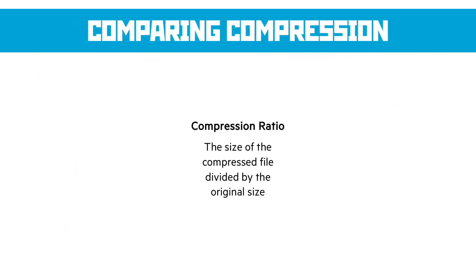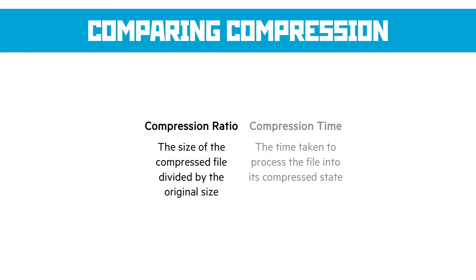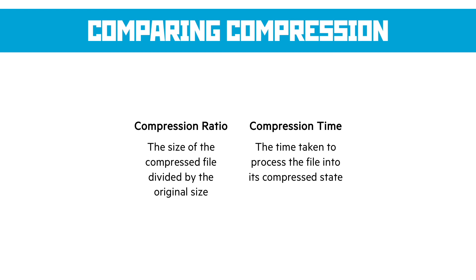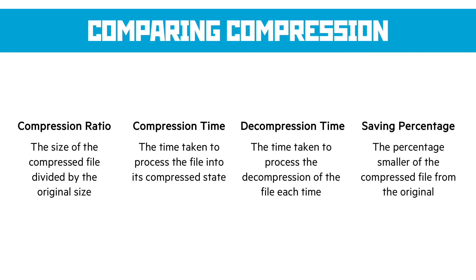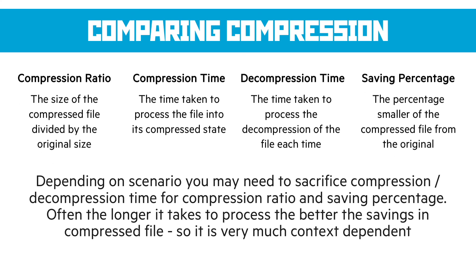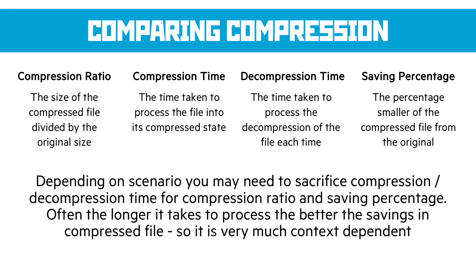When comparing compression methods, the factors to consider are: compression ratio — the size of the compressed file divided by the original size; compression time — how long it takes to compress the file; decompression time — how long it takes to decompress the file each time you want to access it; and saving percentage — how much smaller the compressed file is than the original. Depending on your scenario, you might want to sacrifice compression or decompression time in favour of a better compression ratio and saving percentage. Often the longer it takes to process, the better the savings on the compressed file, so it is very context dependent — think carefully about how the question is worded before answering.